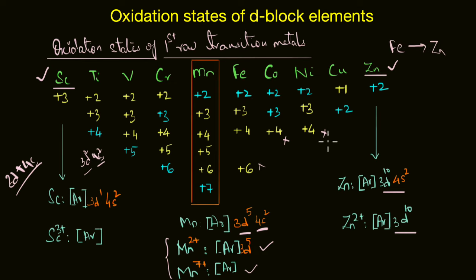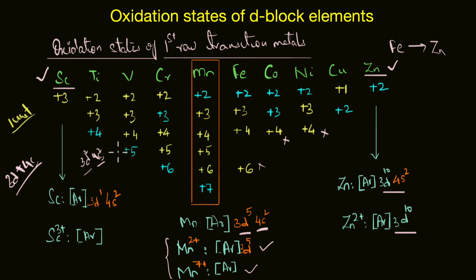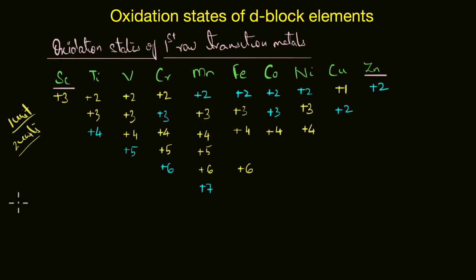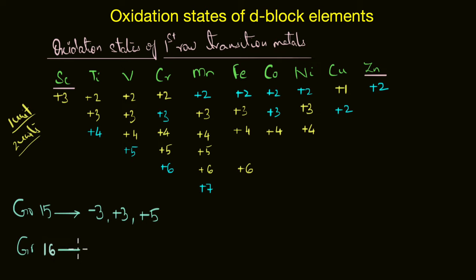Variable oxidation states are an important characteristic property of the d-block elements, occurring due to incomplete filling of the d orbitals. Another interesting feature is that the oxidation states in each of these elements differ by one unit — for example, +2, +3, and +4 in titanium, or +1 and +2 in copper. This is quite different from non-transition elements, where oxidation states usually differ by two units — for example, the common oxidation states of group 15 are −3, +3, and +5, and in group 16 they are −2, +2, +4, and +6.